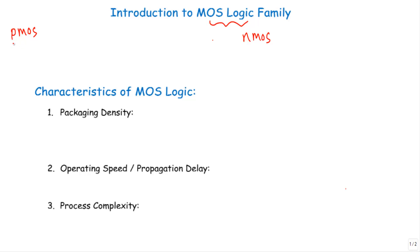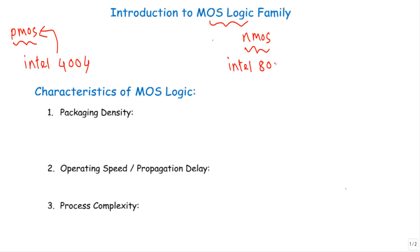Those logic circuits are made using either P-type or N-type MOSFET. For example, Intel 4004 chips are made using P-type MOSFET, and subsequent microprocessor chips such as Intel 8088 and Motorola 6800 are made using N-type MOSFET only.